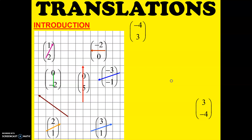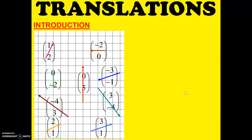This vector is equal to negative 4, 3. Negative 4 means 4 steps to the left and 3 steps up. And for the last vector, it's 3 steps to the right and 4 steps down. Now you see and understand how vectors are read.